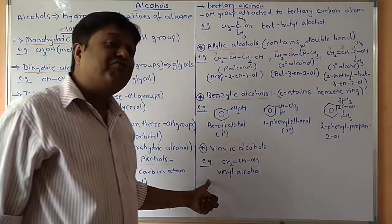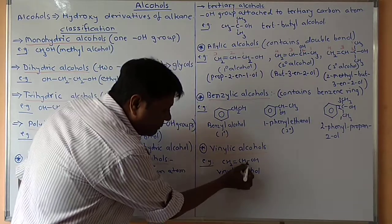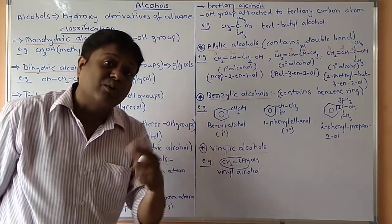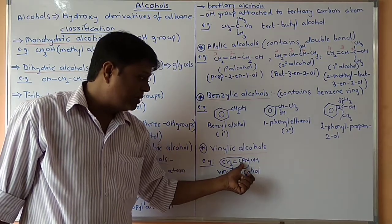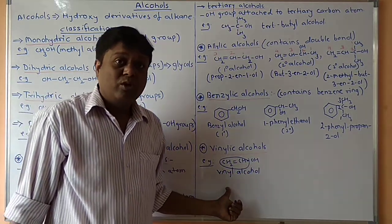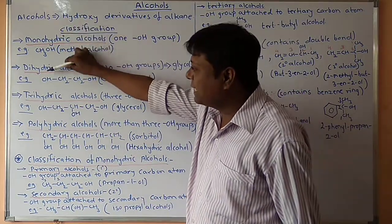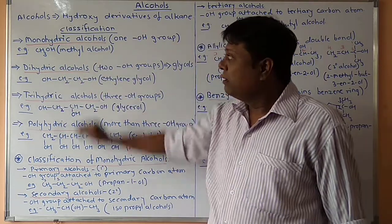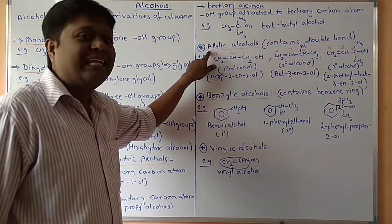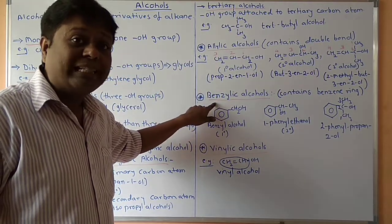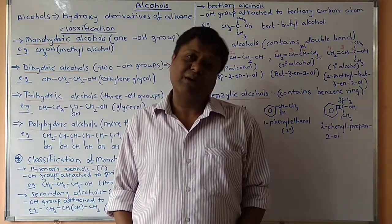Next: vinylic alcohols. Vinyl refers to the vinyl group CH2=CH-. If a hydroxy group is attached to this vinyl group, it is called a vinyl alcohol. To summarize, alcohols are classified into monohydric, dihydric, trihydric, and polyhydric. Monohydric alcohols are further sub-classified into primary, secondary, and tertiary. Other types include allylic alcohols, benzylic alcohols, and finally vinylic alcohols.